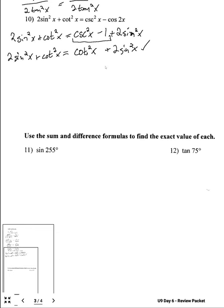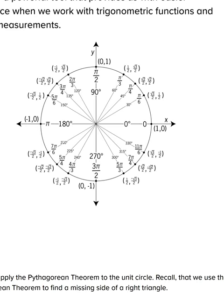A little more practice — sum and difference formulas for exact values. We're looking at 255 degrees. I immediately think: it ends in 5, and the only unit-circle angles that end in 5 are the 45s, 135s, those ones. I'll use 45 — subtracting 45 from 255 gives 210. So 210 plus 45 puts us right at 255. I'm going to use sine of 210 degrees plus 45 degrees.